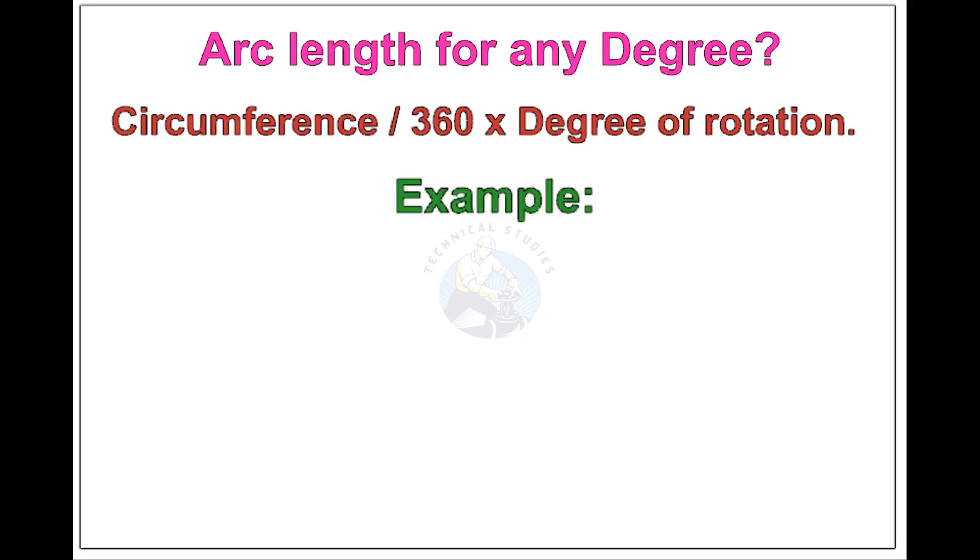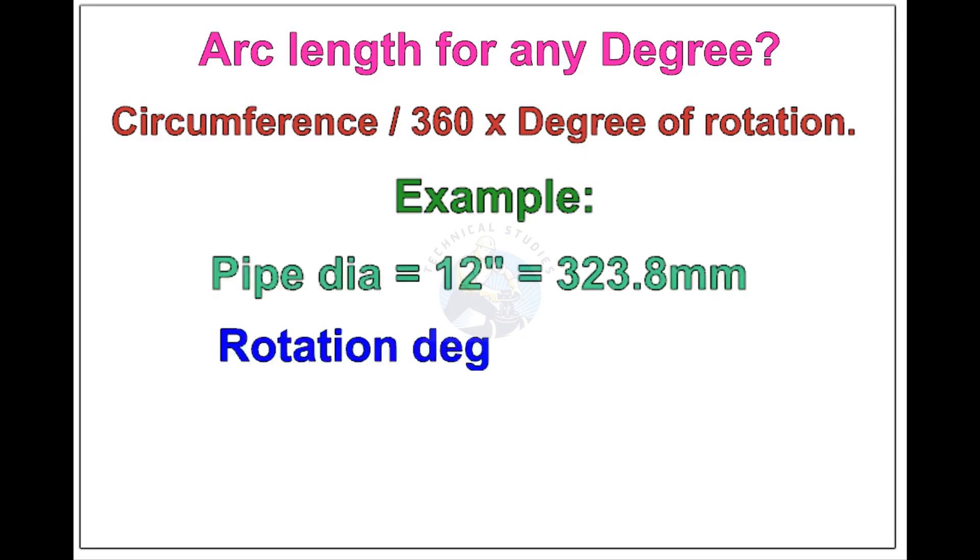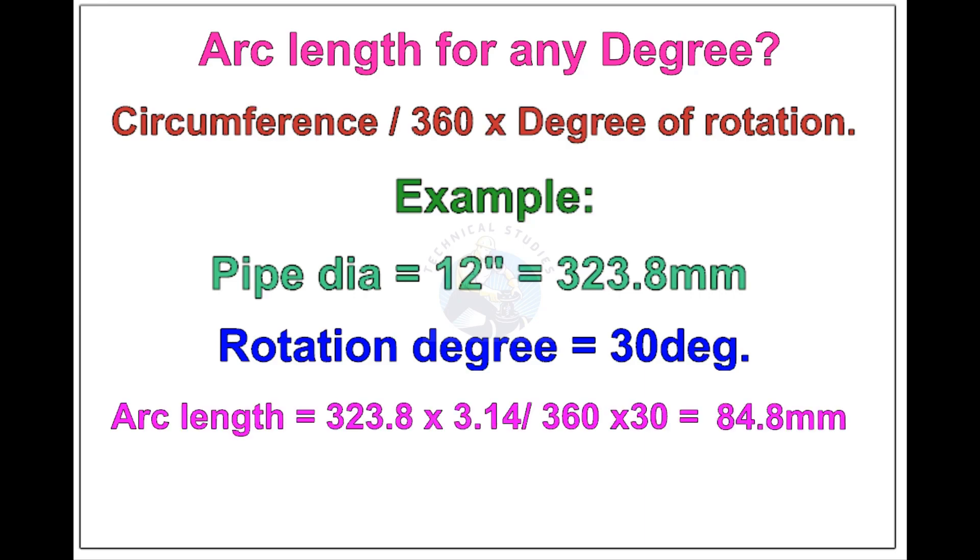Let us check the arc length of 12-inch pipe rotated 30 degrees. Apply the formula. The answer is 84.8 millimeters.